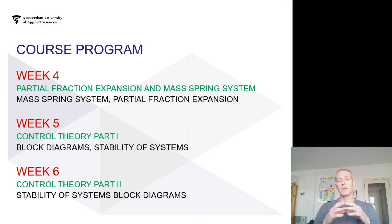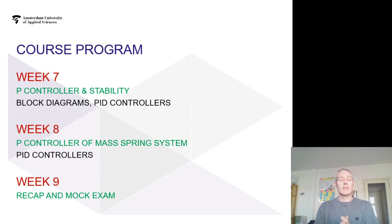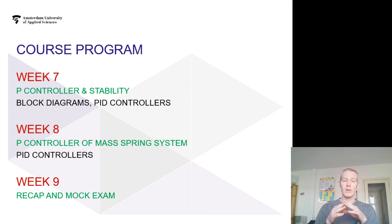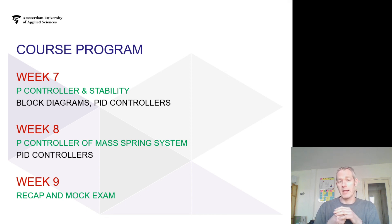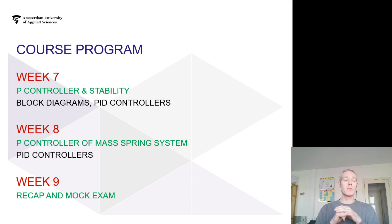In Week 5 we start building control theory with block diagrams and investigating the stability of systems, which continues in Week 6. Weeks 7 and 8 are dedicated to controlling systems — we start with a proportional controller and see how it influences stability. In Week 8 we also talk about a proportional controller applied to a mass-spring-damper system, and we discuss PID — proportional, integral, and derivative — controllers in a more general sense, though most calculations will relate to proportional control. Week 9 will be a recap and mock exam, and Week 10 there will be a final written exam.